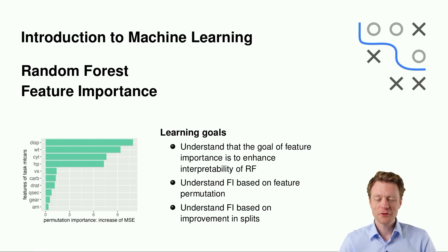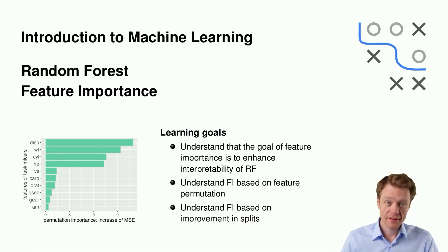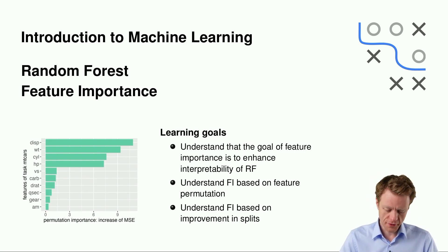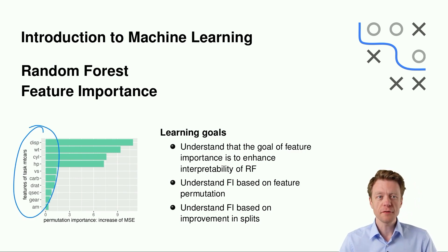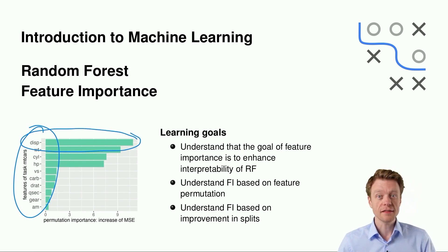Hello and welcome back to Introduction to Machine Learning. I'm Ludwig Burtmann and in this video I will present feature importance methods for random forests. The basic goal will be to get a measure on how important different features are. Here on the left-hand side, for example, the features of the mCARS dataset — the higher the value, the more important that feature is.